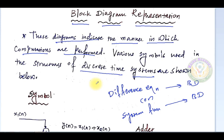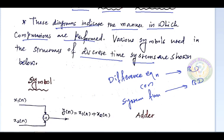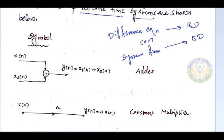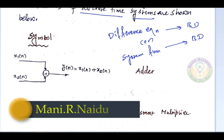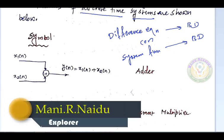If you want to make any changes in the computation or if you want a different output, you can make changes in the block diagram. The block diagram is used to easily visualize how the system looks. Rather than seeing the system function as a mathematical equation, here we are going to see it as a pictorial representation, which makes it easy to understand the system.